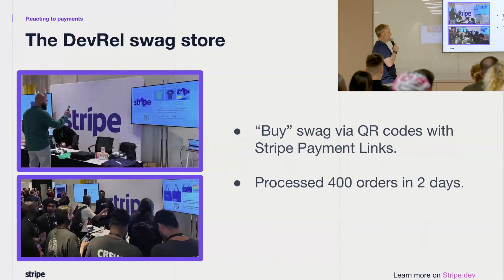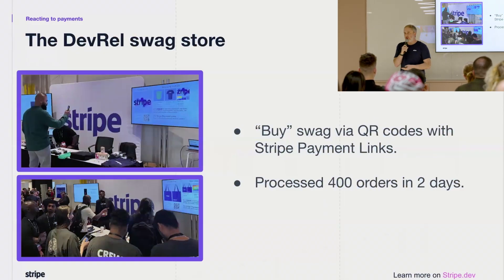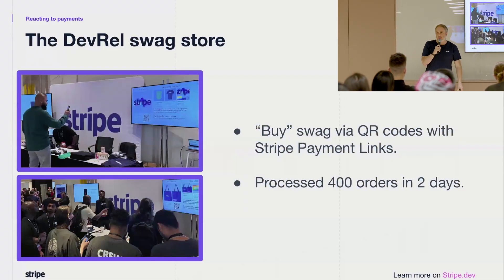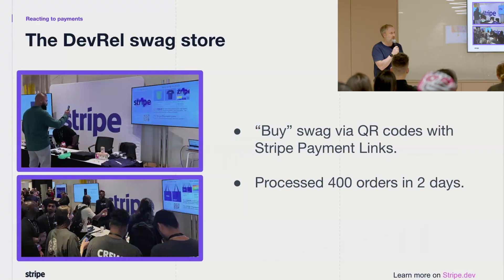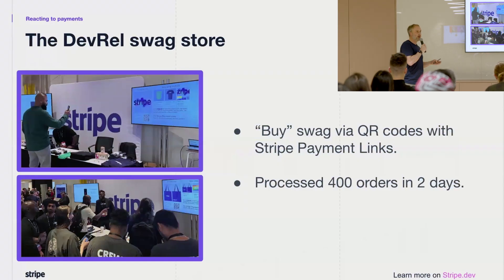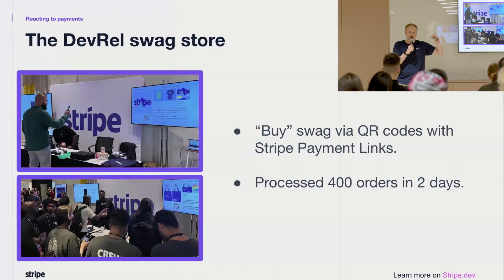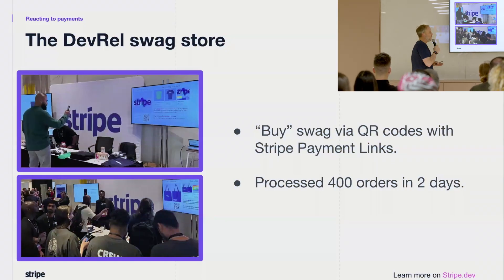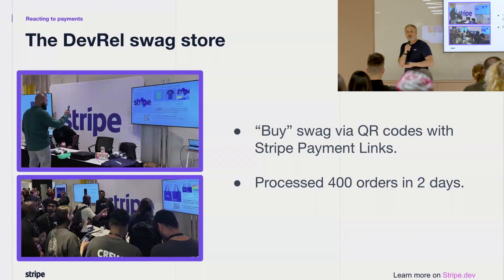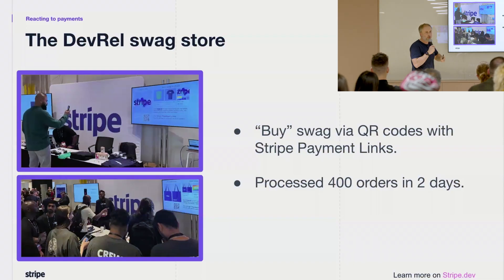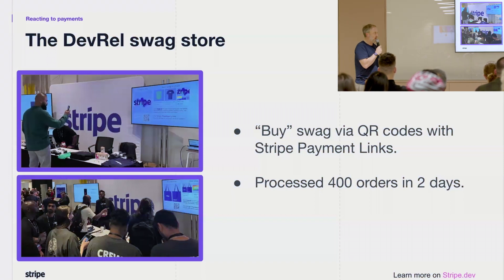The DevRel Swag Store is, in essence, a demonstration of Stripe technology. Before joining Stripe, I was at AWS as a developer advocate for Serverless, where my team created an application called Serverless Spresso, which allows you to order a cup of coffee from your mobile phone using Serverless technology. We built that for re:Invent, the big customer conference at AWS, and it was such a hit — enabling developers to use Serverless technology and have engaging conversations in a real application — that it became the go-to demo for workshops, summits, and AWS meetups all over the world for the next two years.